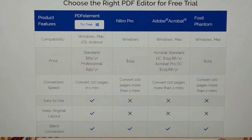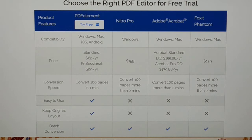PDF Element is available for Windows, Mac, iOS, and Android. Nitro Pro is available only for Windows. Acrobat is available for Windows and Mac. Foxit is available for Windows and Mac. So it supports a wide range of operating systems and devices.